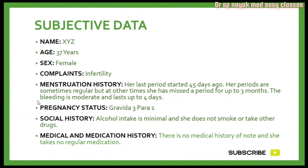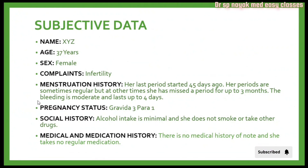Social history: alcohol intake is minimal and she does not smoke or take other drugs. In cases of infertility, alcohol intake and smoking may have an adverse effect on ovulation in females. In males, reduced sperm motility and sperm count are noticed with high alcohol intake or chronic smoking.